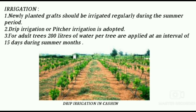Irrigation in cashew: newly planted grafts should be irrigated regularly during the summer period. Drip irrigation or pitcher irrigation is adopted. For adult trees, 200 liters of water per tree are applied at an interval of 15 days during the summer months. As you can see in the picture, drip irrigation is being used in the cashew plantation.